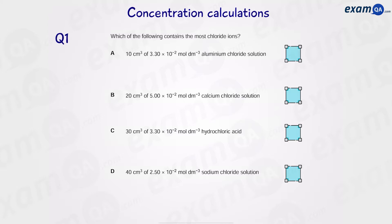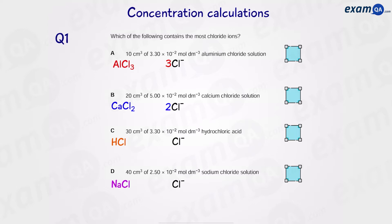Question one: which of the following contains the most chloride ions? The first thing we're going to do is write down the formula of what we have. We have aluminium chloride which is AlCl₃, calcium chloride, hydrochloric acid, and sodium chloride. Aluminium chloride has three chloride ions per AlCl₃, calcium chloride has two, and HCl and NaCl have a one-to-one ratio with their chloride ions.